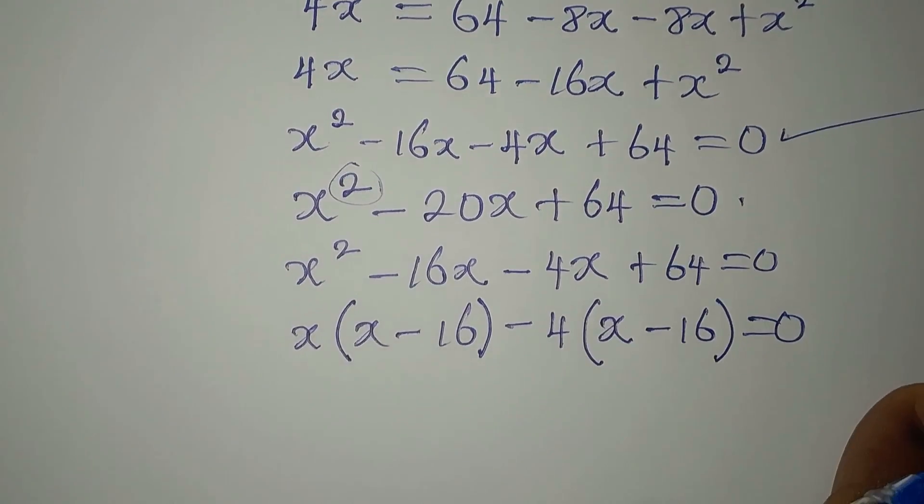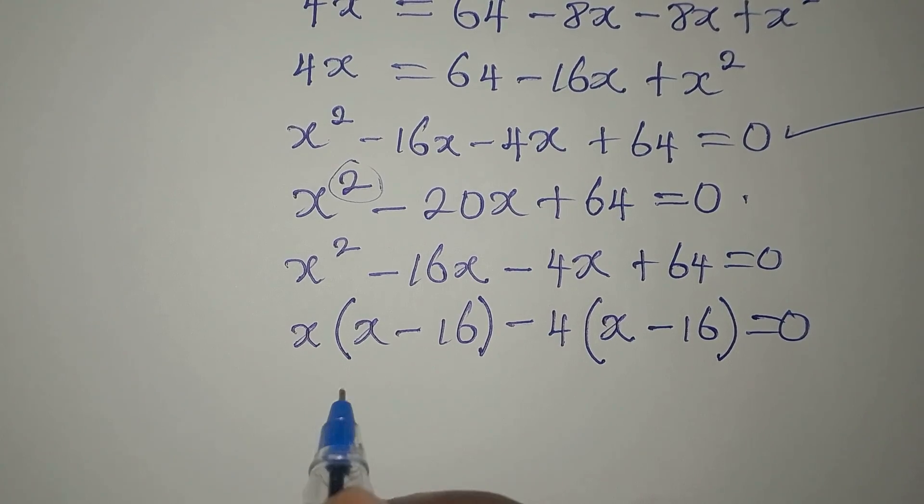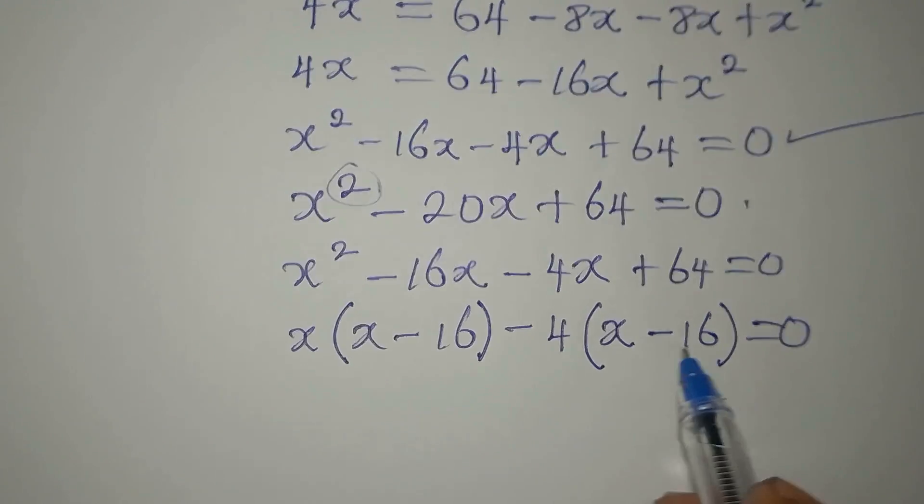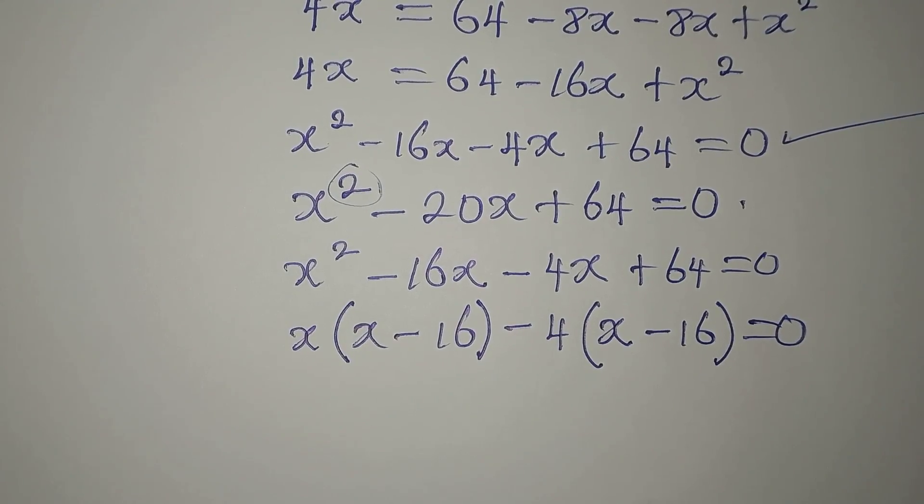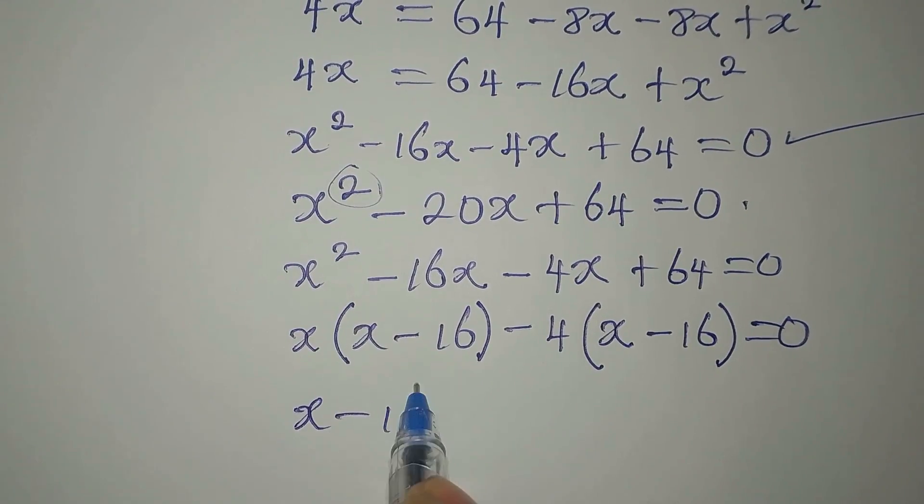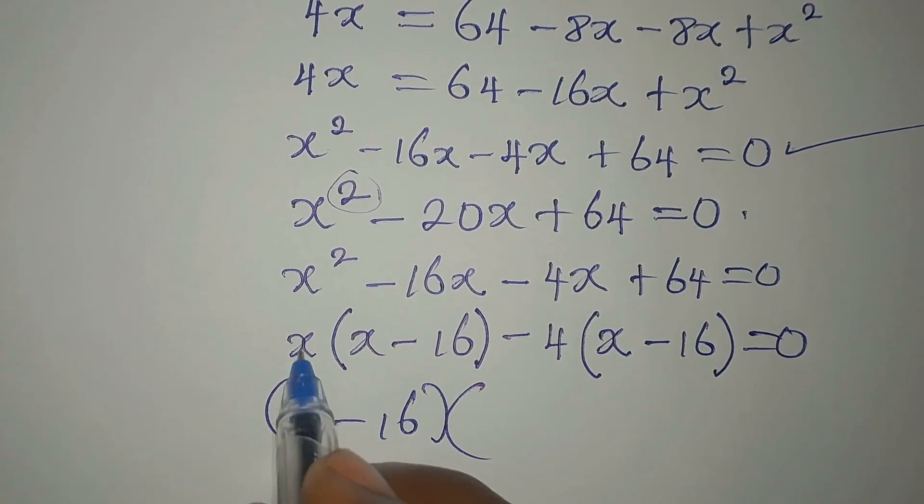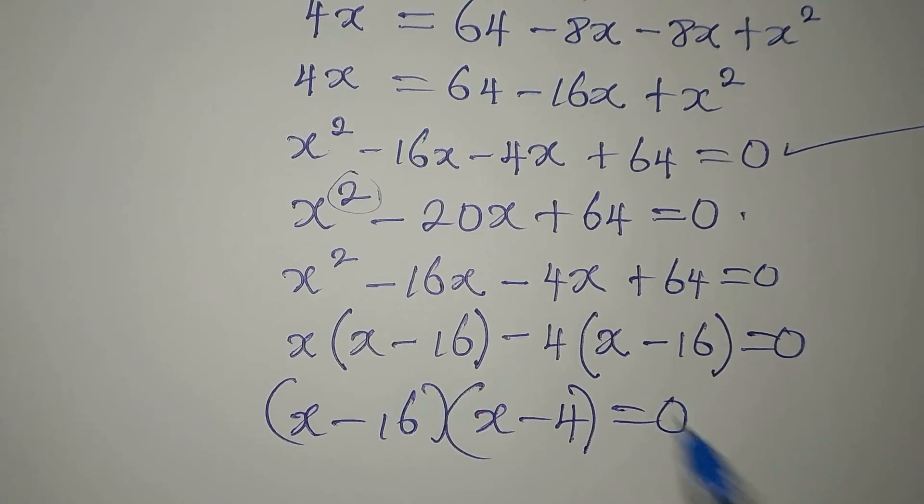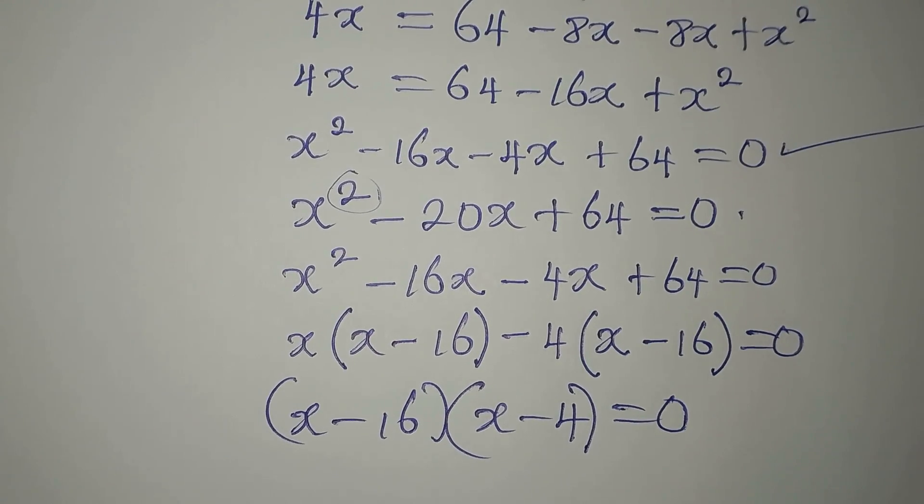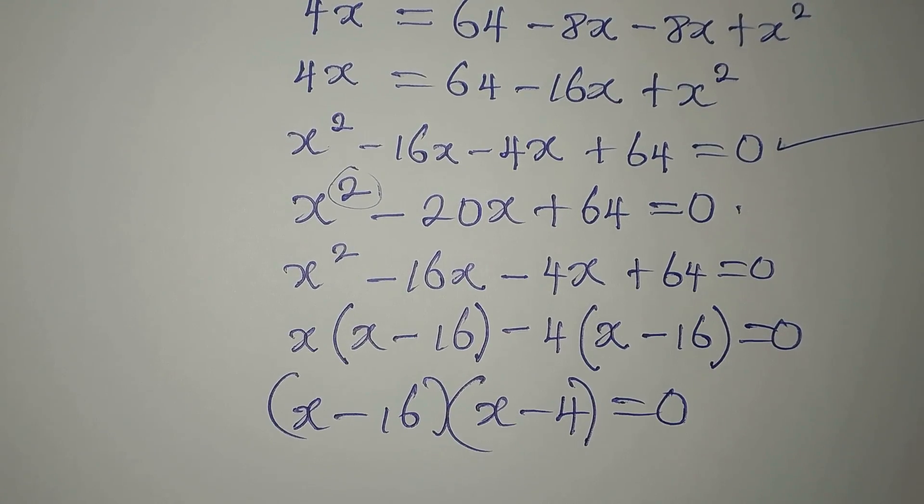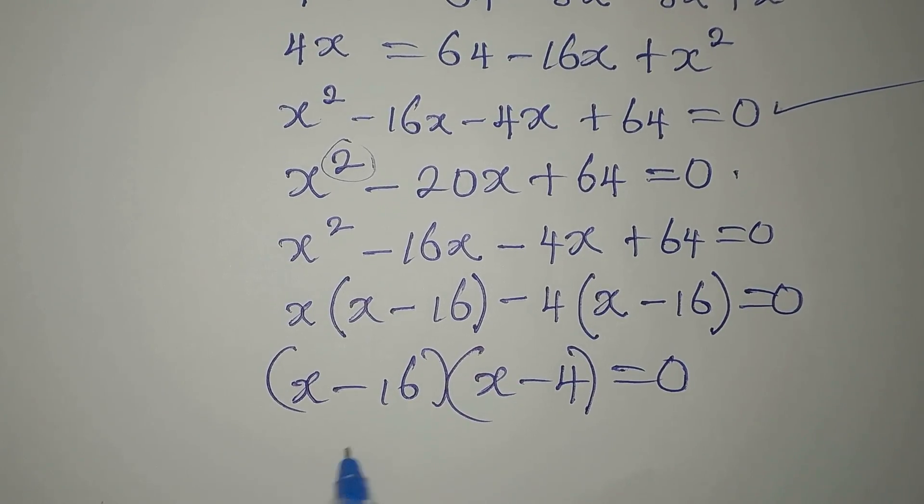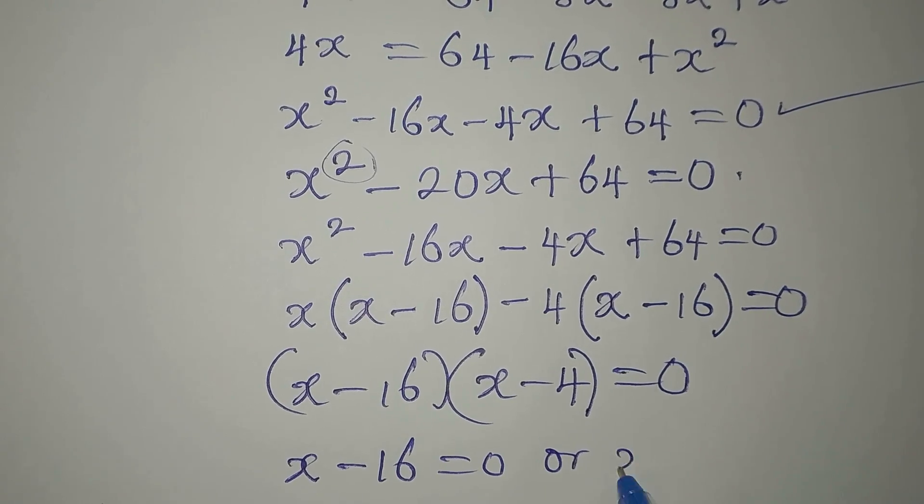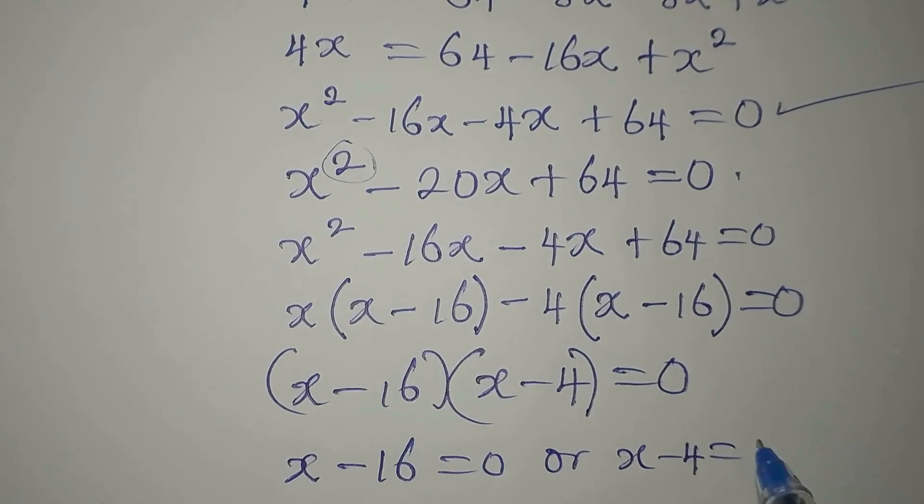By the way, we are using the factorization method. Now we are going to factorize x minus 16 because it belongs to these two. Write x minus 16. Then here we're having x minus 4, and we equate all of this to 0. And every time you multiply two terms to get 0, either of them must be equal to 0. So we say x minus 16 is equal to 0 or x minus 4 is equal to 0.